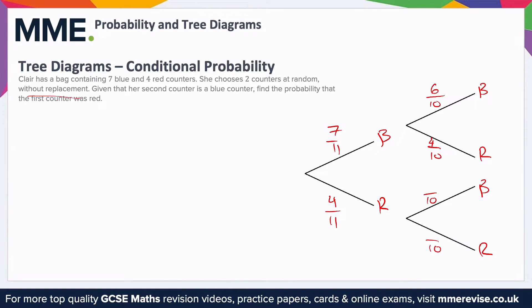If you draw a red first, of course the blue counter doesn't change, so still seven blue. If you draw a red first, four originally, take one away, there's only three left. So this one's three out of 10. Notice how each pair adds up to one.